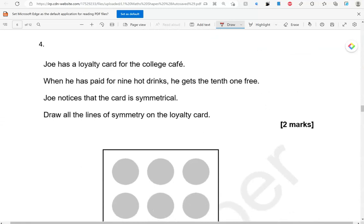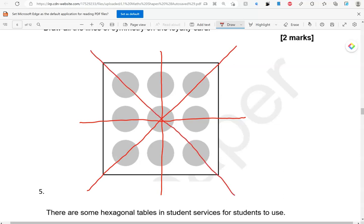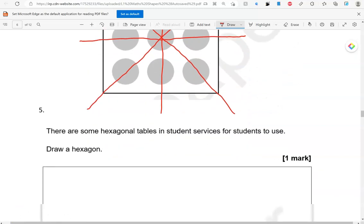Joe has a loyalty card for the college cafe. When he has paid for nine hot drinks, he gets the tenth one free. Joe notices that the card is symmetrical. Draw all the lines of symmetry on the loyalty card. So, that's four lines of symmetry.